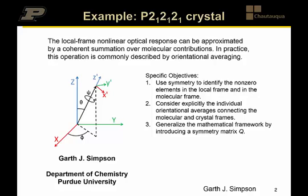These coordinate transformations are often easiest to see through example. Let's consider a P212121 crystal, and we're building this up of molecules that contain chromophores that are planar. We're going to map the symmetry relationships of the P212121 crystal to find out what tensor elements are present, and then determine the orientational averages connecting the two to describe the nonlinear optical properties of the crystal in the crystal reference frame.